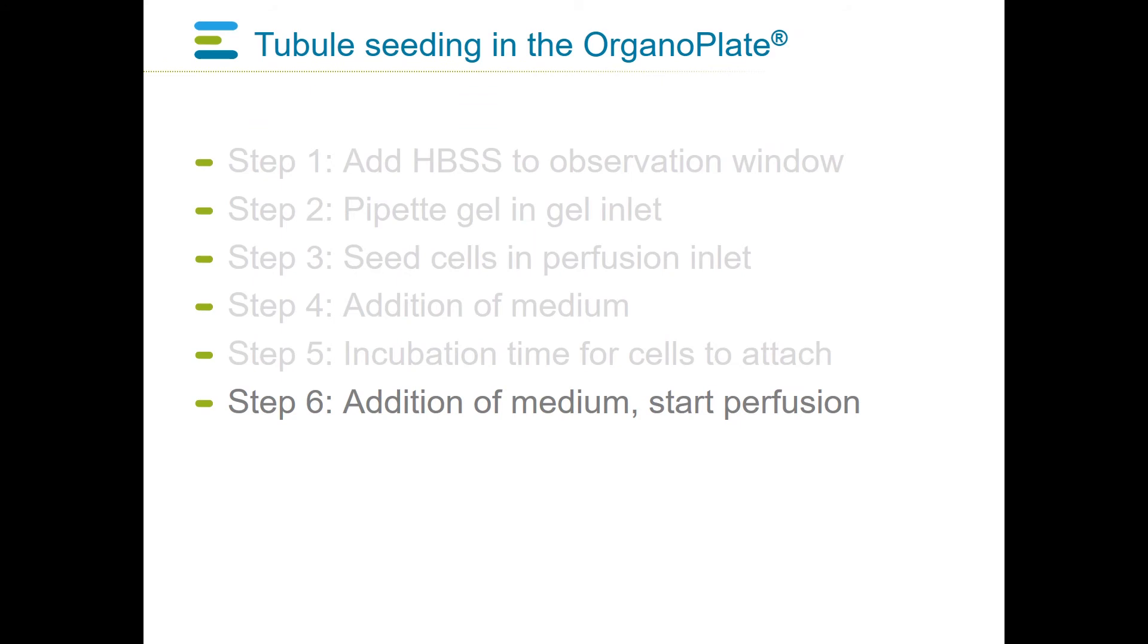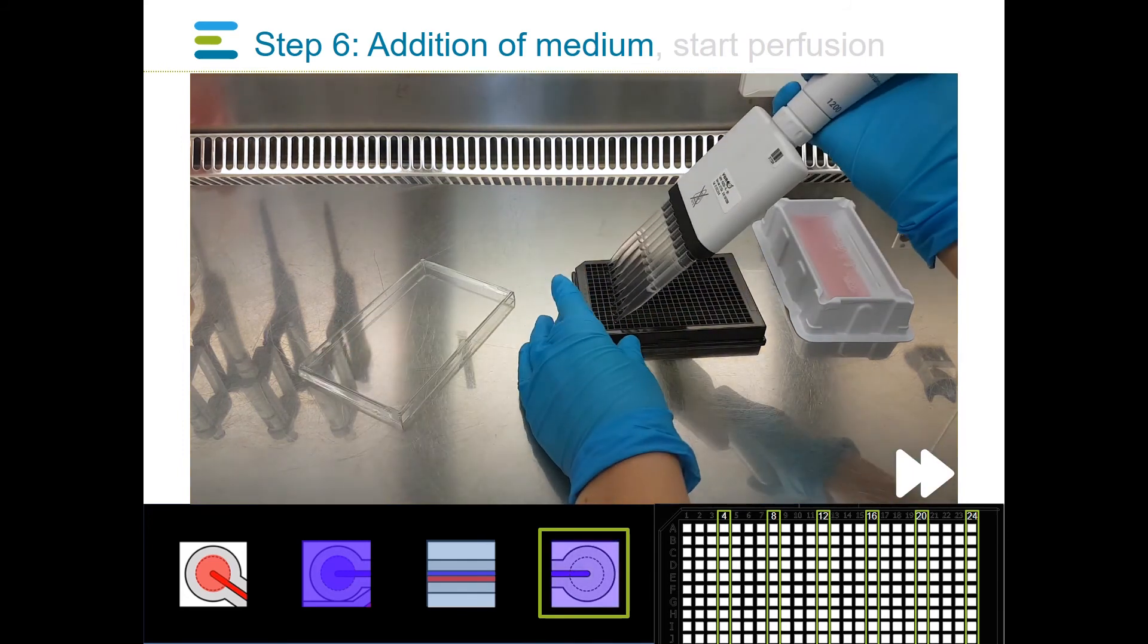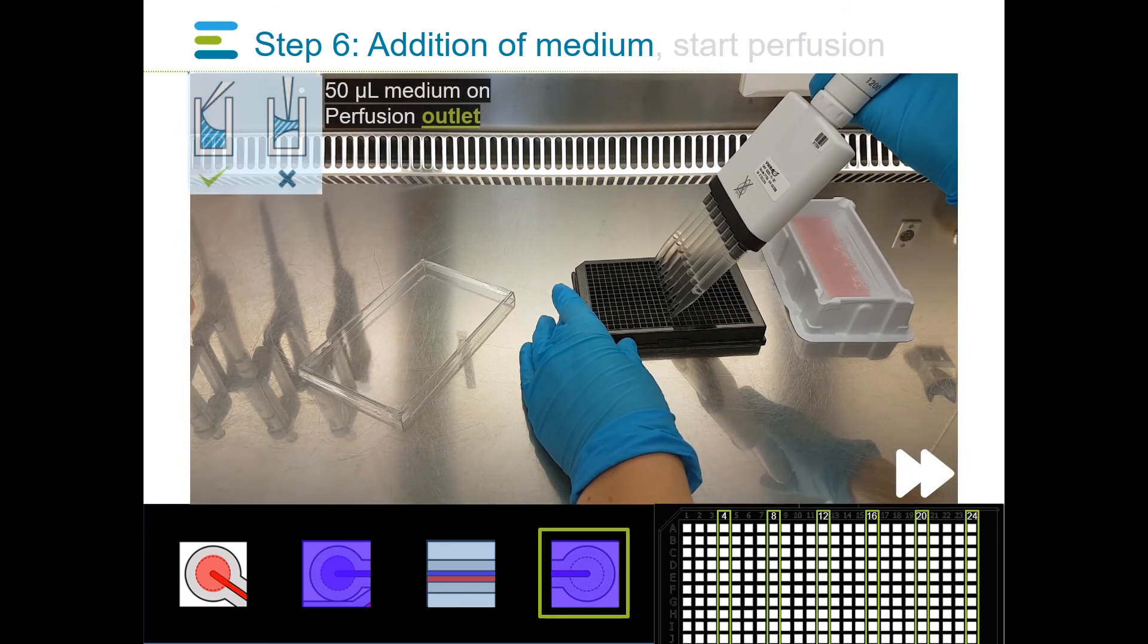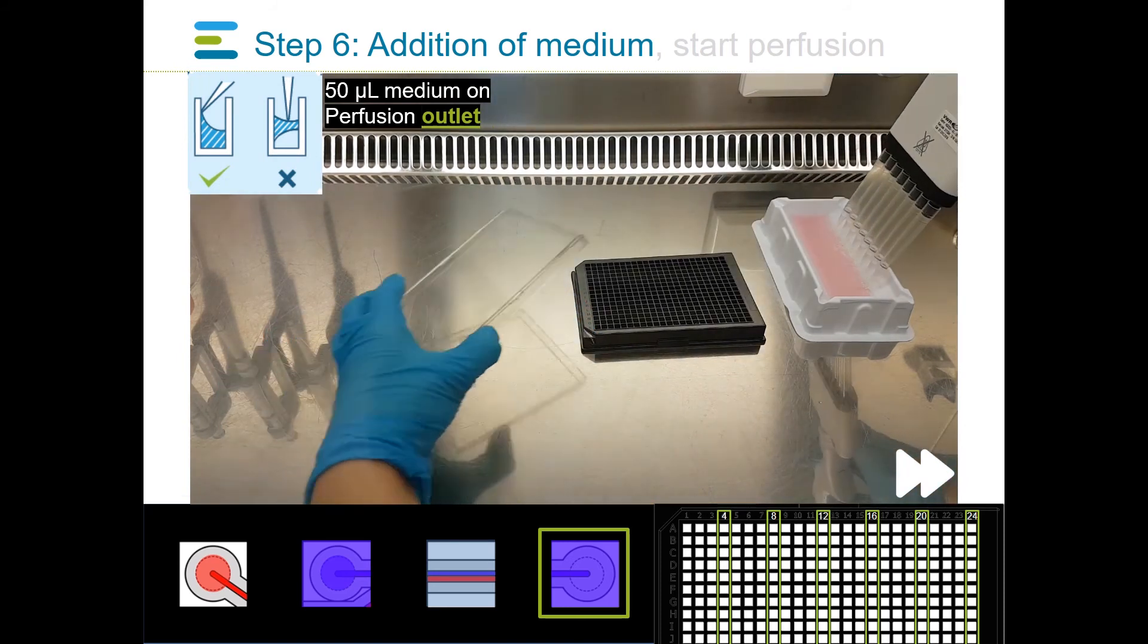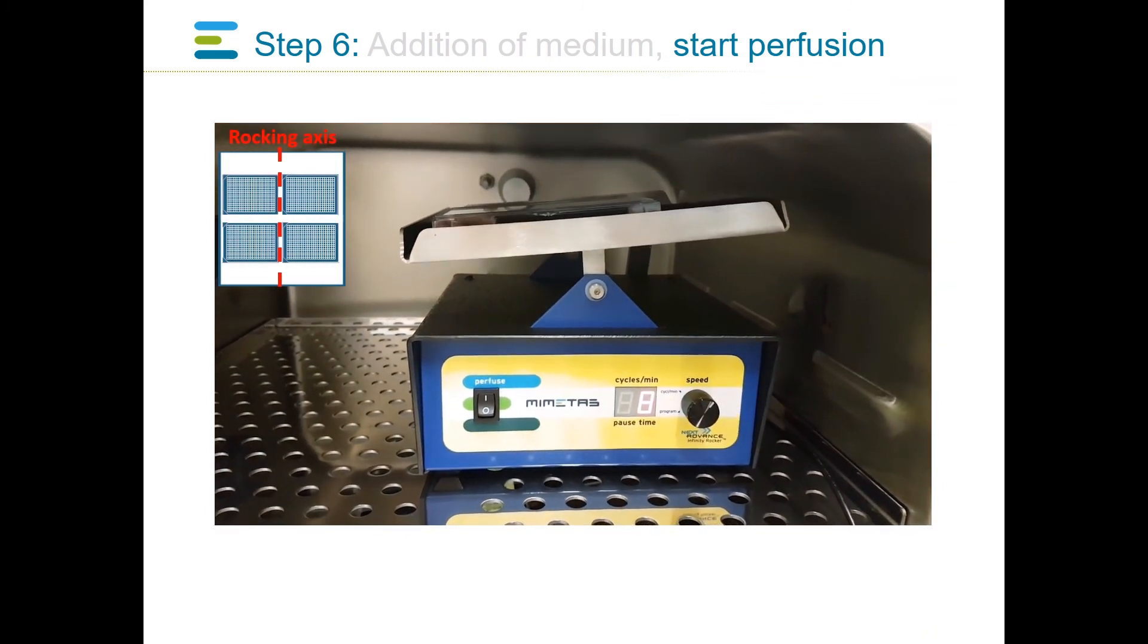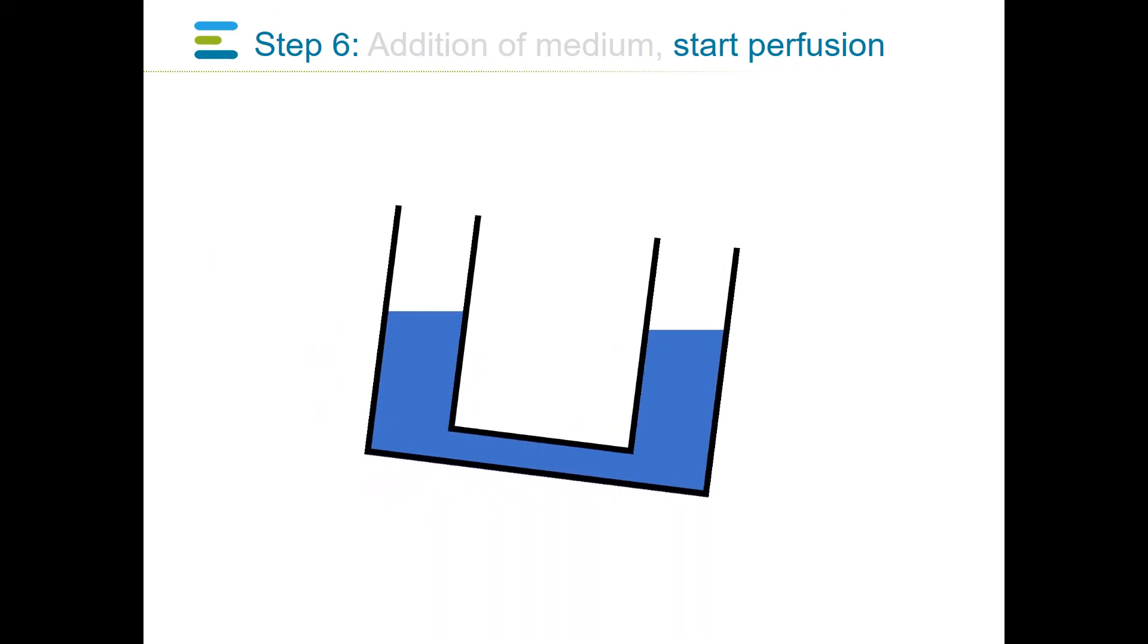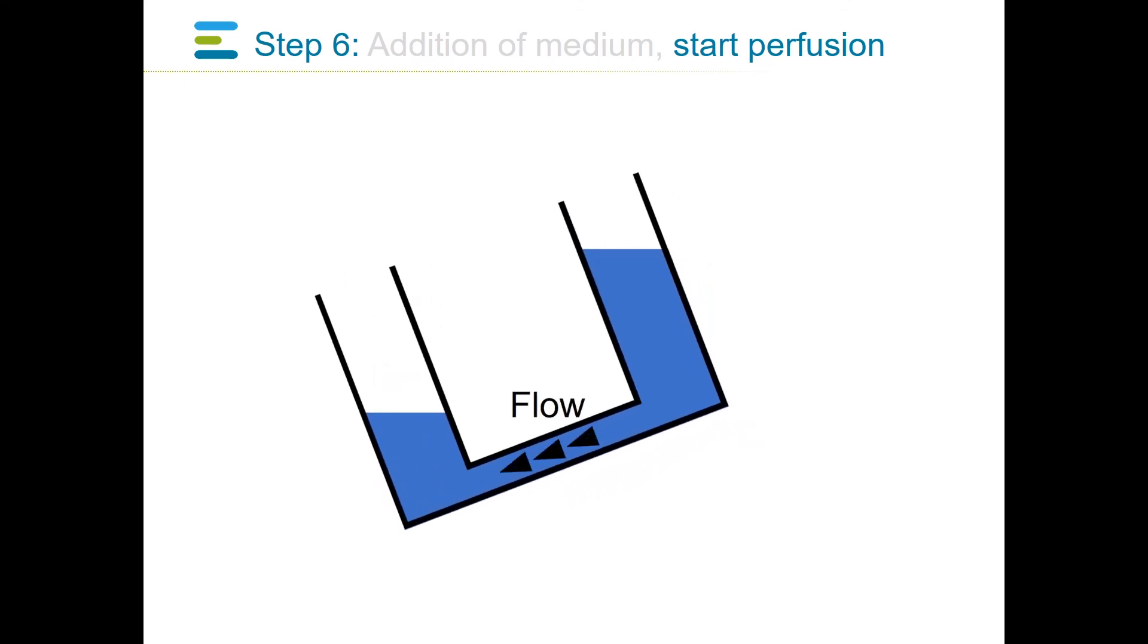In step six, medium is added and perfusion is started. Using a multi-channel pipette and aseptic techniques, add 50 microliters of medium to the wells of columns 4, 8, 12, 16, 20, and 24. After addition of medium, perfusion can be started by placing the Mimetas organoplate on a perfusion rocker in a tissue culture incubator. Liquid leveling between wells will ensure continuous perfusion through the perfusion channel as the rocker moves from side to side. Please note that the perfusion speed can be modulated by adjusting the perfusion rocker cycle time and angle.